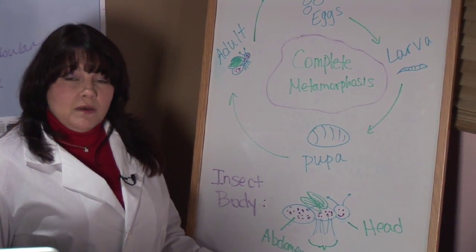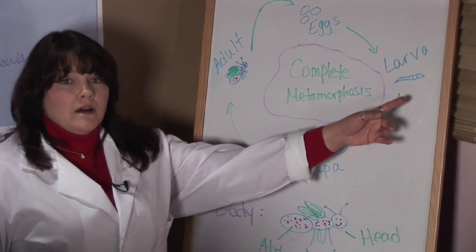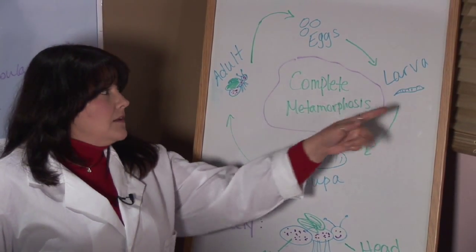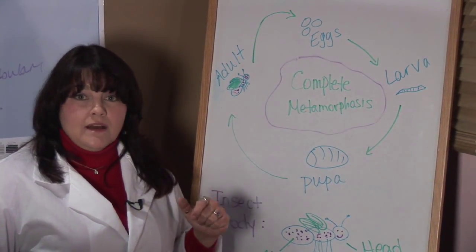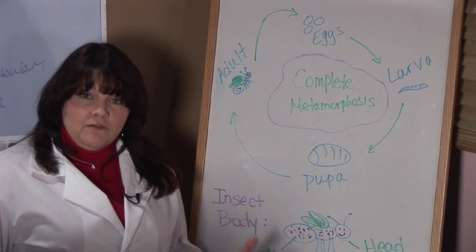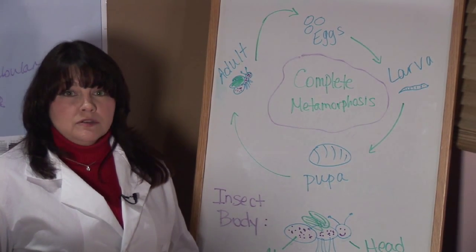The difference between mosquitoes and butterflies is that mosquito larvae are aquatic insects. They have to be in the water. They can't survive out on land. So, if you find a mosquito, it's going to be close to water.